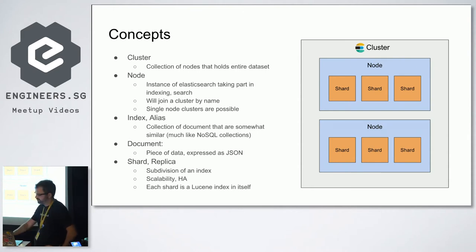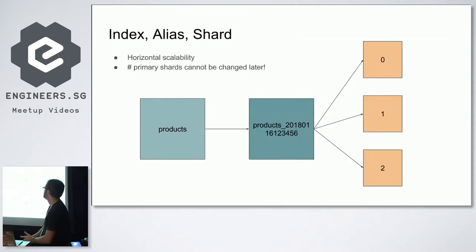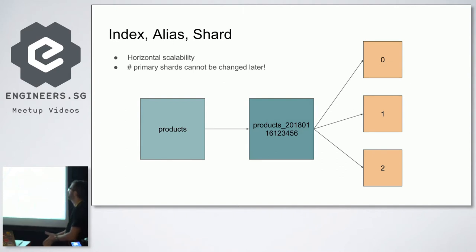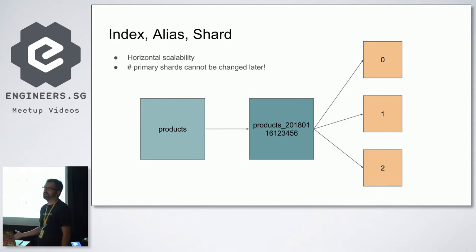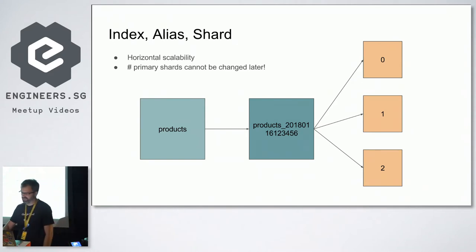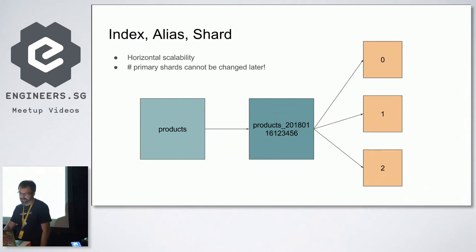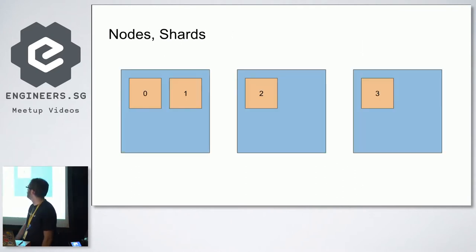Shards are there for ensuring scalability and availability. One important thing: you cannot change the number of shards once you have an index. If you say your index has five shards, you can't change that later, so you have to plan ahead. There's a lot of documentation on the Elasticsearch website — it's pretty good.